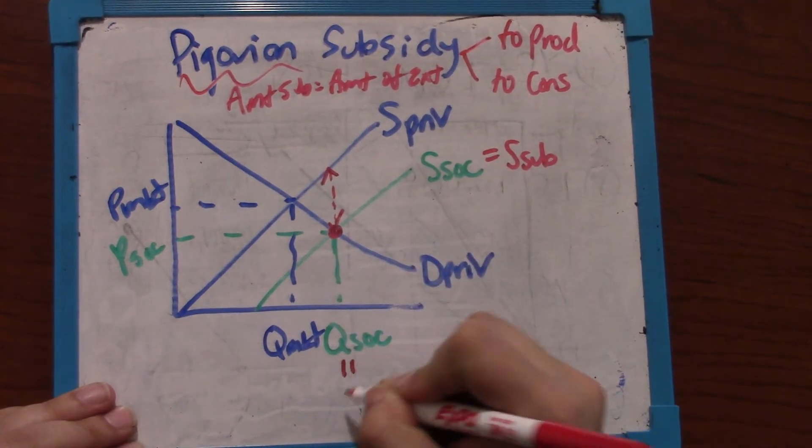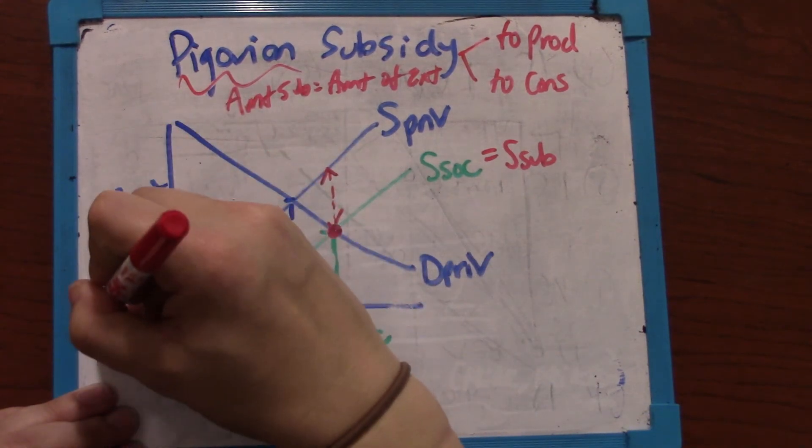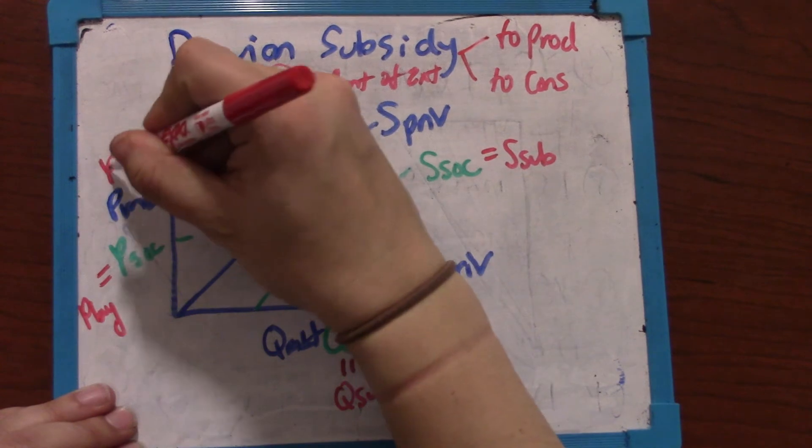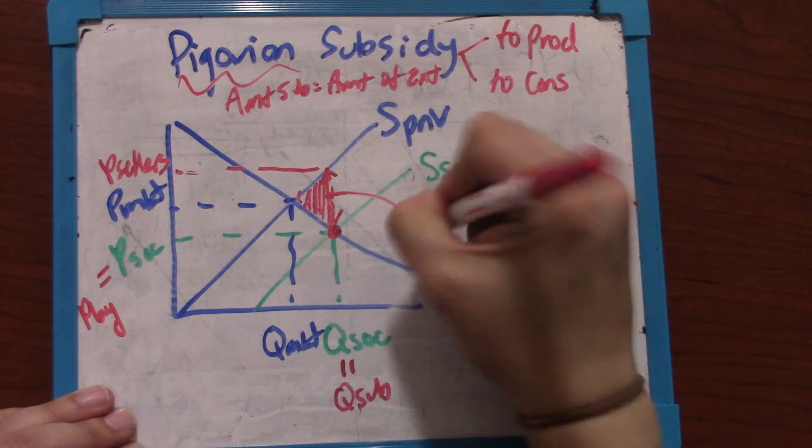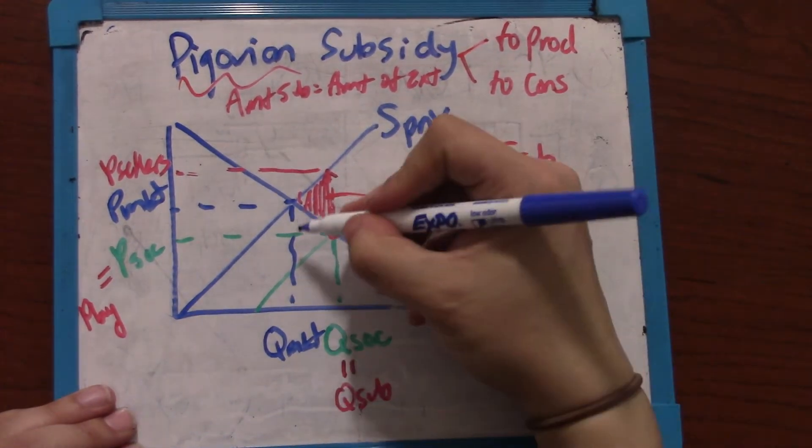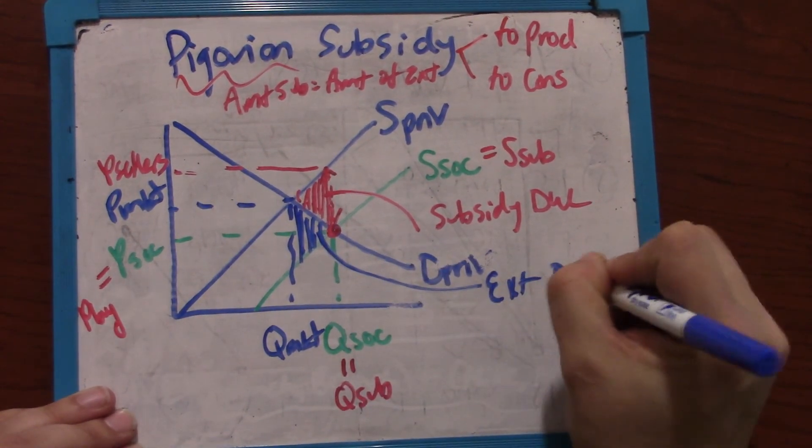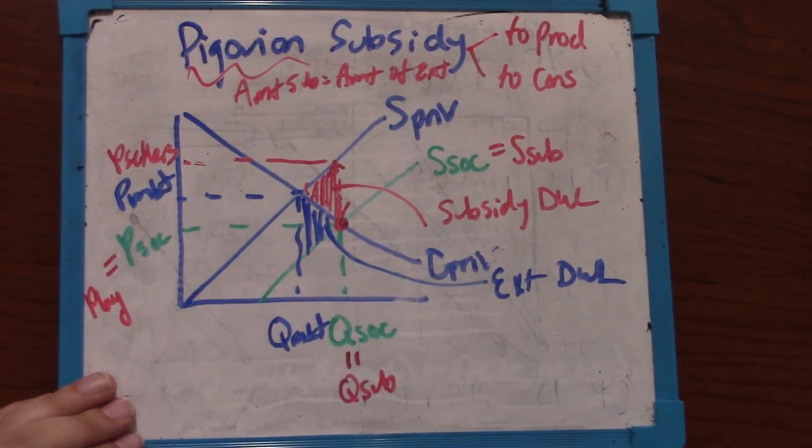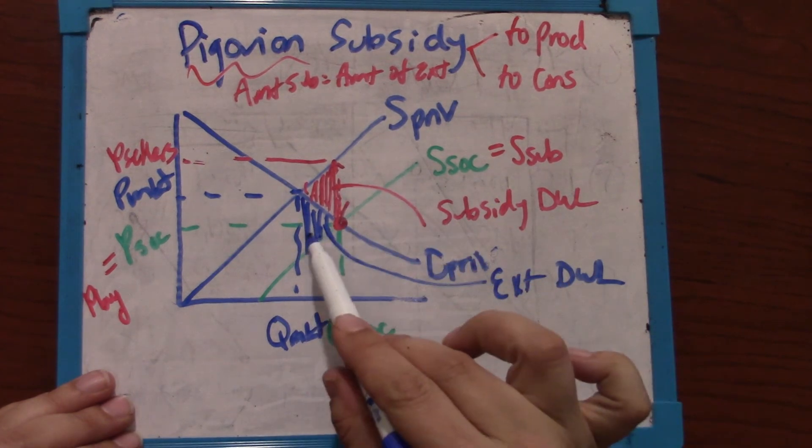That new subsidy supply will result in the higher quantity we want, exactly equal to the social price. Buyers will pay lower prices, sellers will receive higher prices, and the subsidy creates this deadweight loss. But we just showed that the externality itself was creating this deadweight loss. So after the subsidy, society is actually neutral. There's no extra deadweight loss created. They've corrected and eliminated this externality deadweight loss but created a little bit of subsidy deadweight loss.